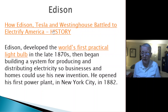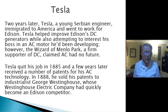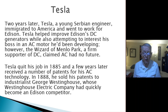This comes from the History Channel. Two years later, Tesla, a young Serbian engineer, immigrated to America and went to work for Edison. Tesla helped improve Edison's DC generators while also attempting to interest his boss in an AC motor he'd been developing. However, the wizard of Menlo Park — Edison — a firm supporter of DC, claimed AC had no future.